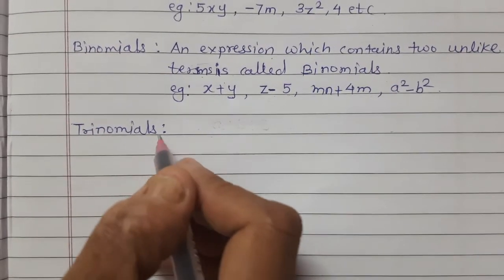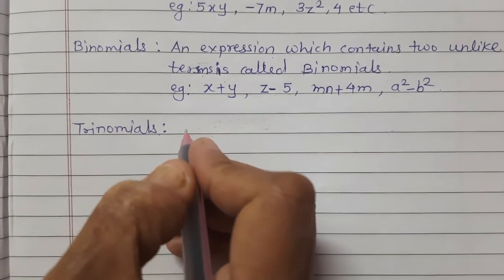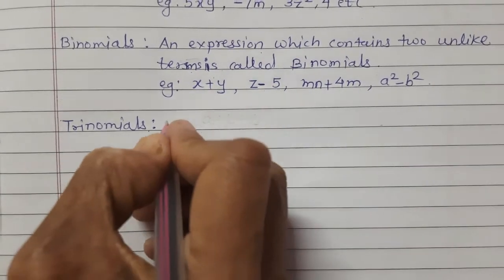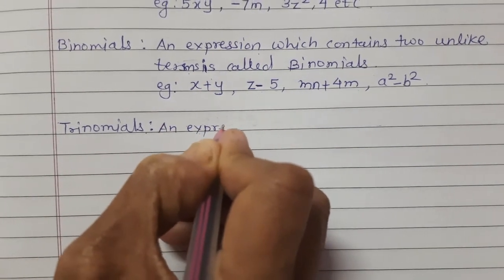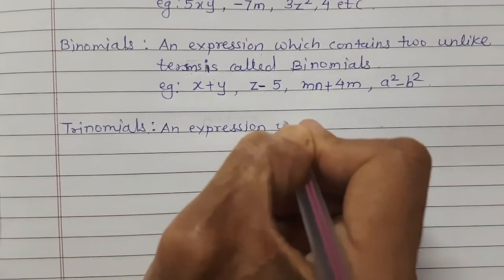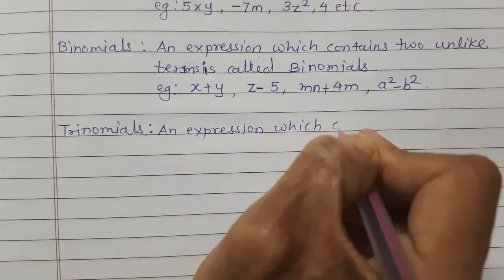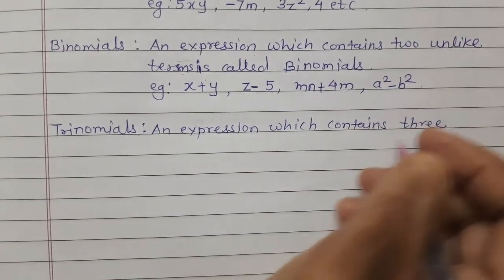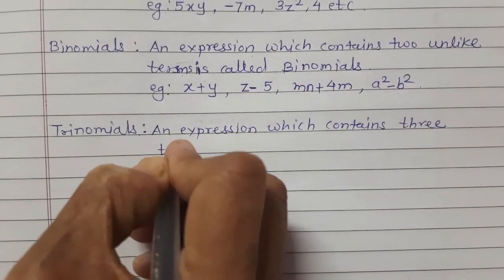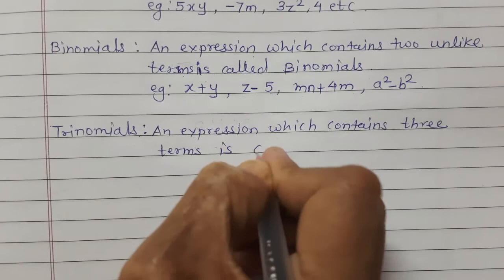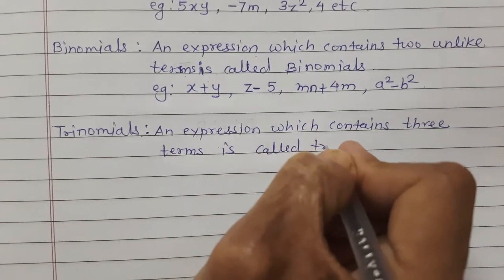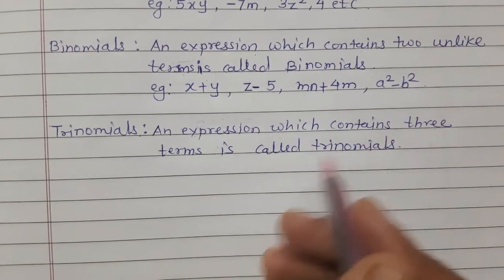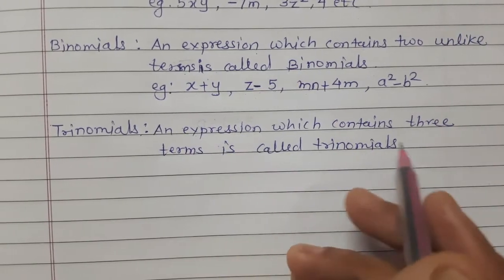See trinomials. An expression which contains three unlike terms is called a trinomial.